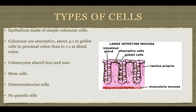The cells that make up the intestine are simple columnar, because columnar cells are for absorption. There are goblet cells, which are more numerous in the proximal colon and decrease in number toward the distal colon. Colonocytes, or colon cells, absorb water and ions. They have stem cells at the bottom of each gland that give rise to enteroendocrine cells, mucosal cells, or goblet cells. There are no Paneth cells in the large intestine — only in the small intestine.